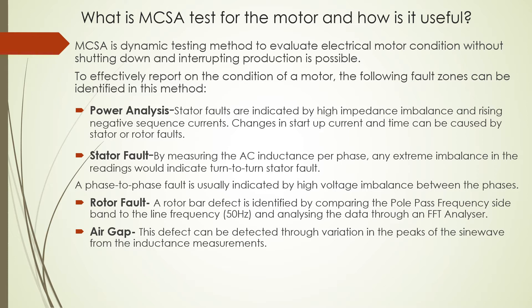A phase-to-phase fault is usually indicated by high voltage imbalance between the phases. Rotor fault: a rotor bar defect is identified by comparing the pole pass frequency sideband to the line frequency and analyzing the data through an FFT analyzer. Air gap: this defect can be detected through variation in the peaks of the sine wave from the inductor measurements.